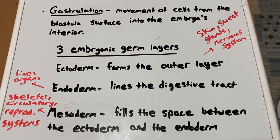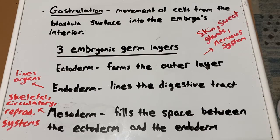The first layer is the ectoderm, and this forms the outer layer. The next layer is the endoderm, and this lines the digestive tract. And lastly, we have the mesoderm, which fills the space between the ectoderm and the endoderm. These three layers will turn into all the tissues and organs of the organism.